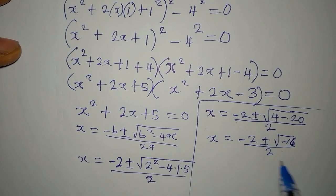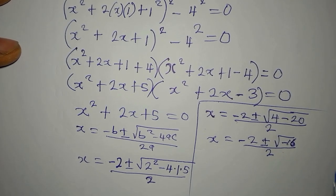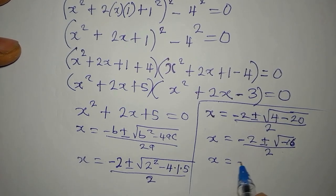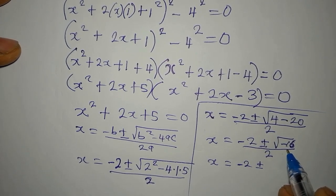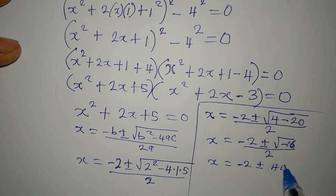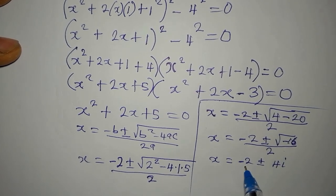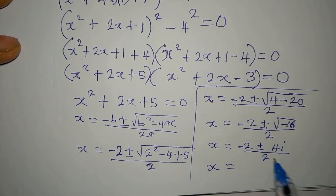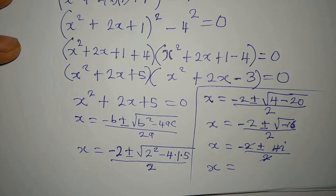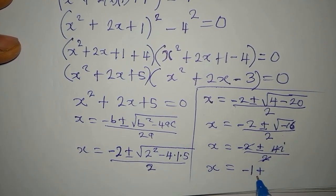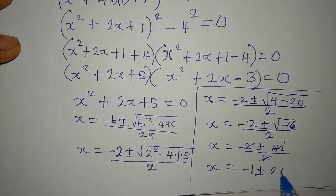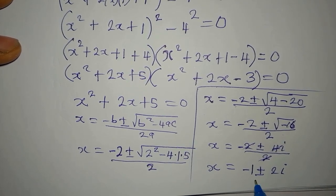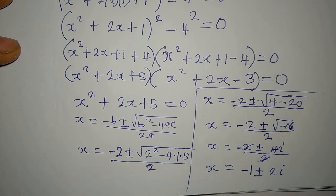So x equals minus 2 plus or minus square root of negative 16, divided by 2. The square root of negative 16 gives us 4i, since i accounts for the negative. Dividing everything by 2 gives x equals minus 1 plus or minus 2i. This is a two-in-one solution — let's leave this and go to the second expression.